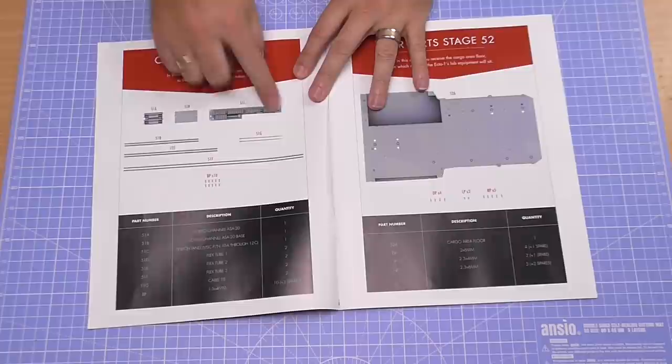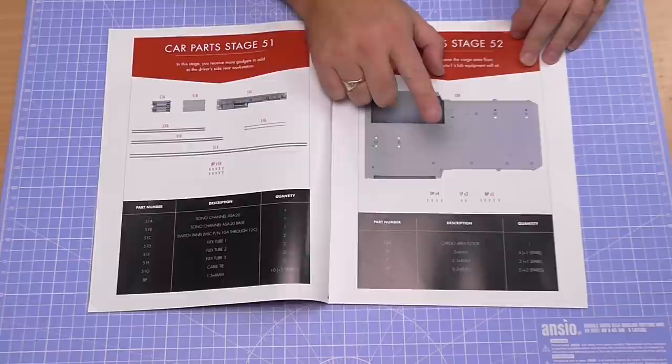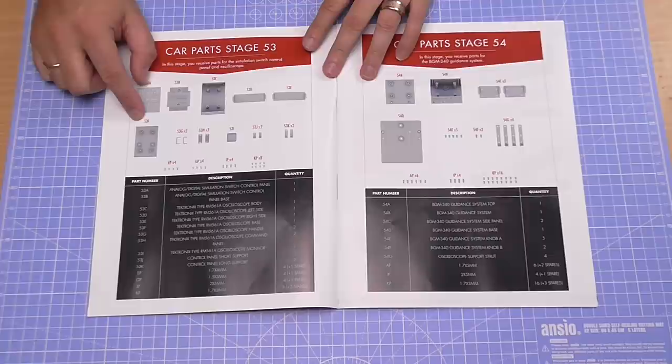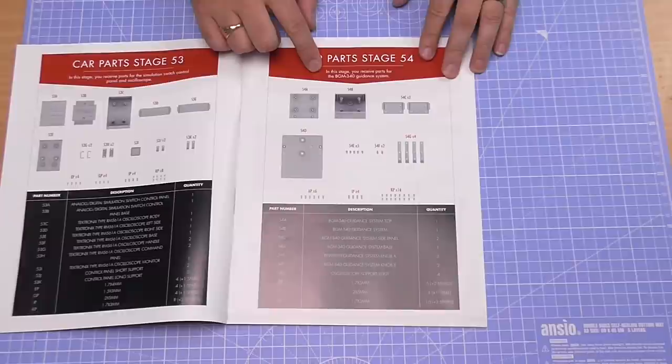We've got this floor plan. I'm going to show you this in a minute. It's absolutely ginormous. That's issue 52. Then we're going to be working on the parts for the simulation switch control panel and oscilloscope. And then the last thing we've got in this stage, you're going to receive parts for the BGM 340 guidance system, which looks just like that.